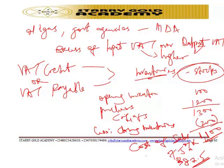It is important to know that inventories are measured at the lower of cost and net realizable value. The cost of inventories shall comprise cost of purchase, cost of conversion, and other costs incurred in bringing the inventories to their present location and condition — in line with the requirements of IAS 2 under International Accounting Standards. For better understanding, let's work through an illustration.